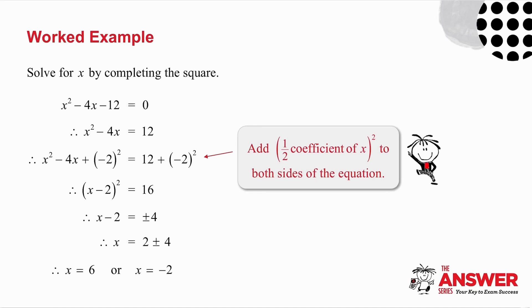Remember, when you square a binomial you get: square the first, twice the product of the two, square the last. To get back to the x squared, the first term must be x. To get the minus 4x middle term, I take twice the product: x times minus 2 is minus 2x, doubled is minus 4x.